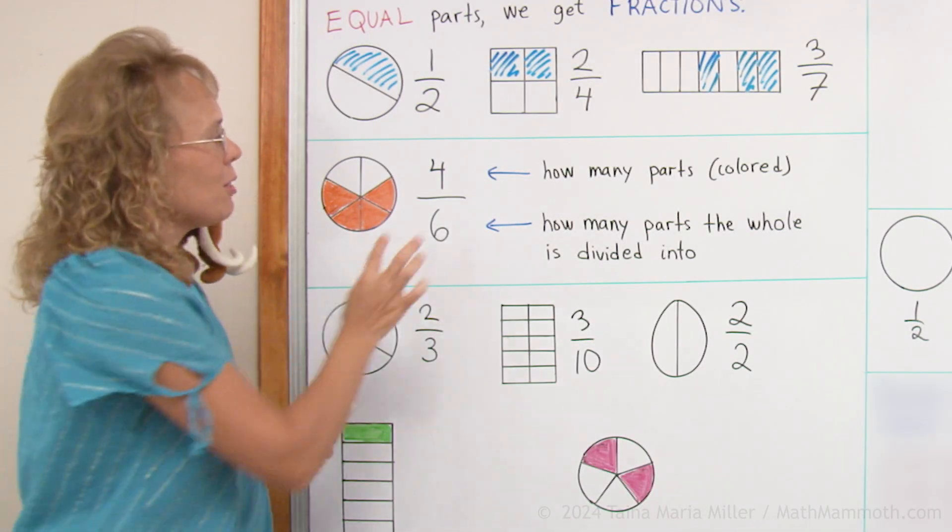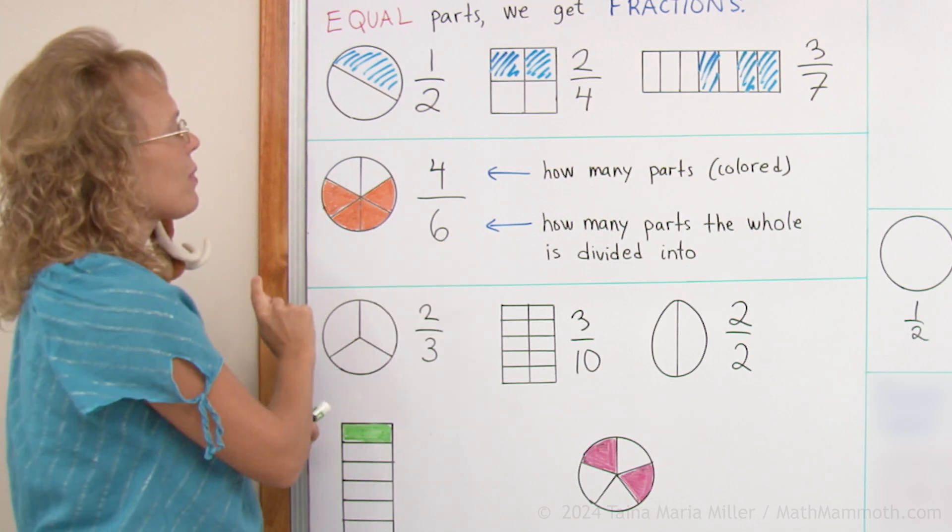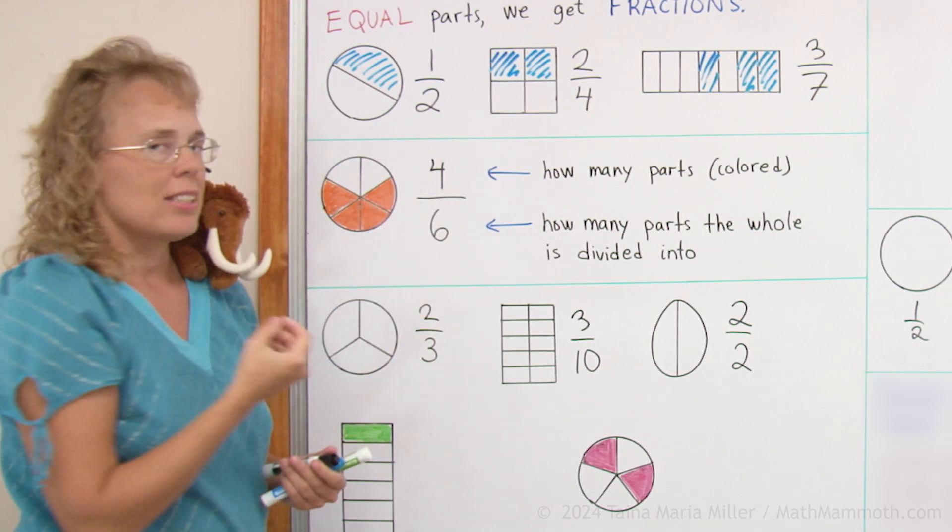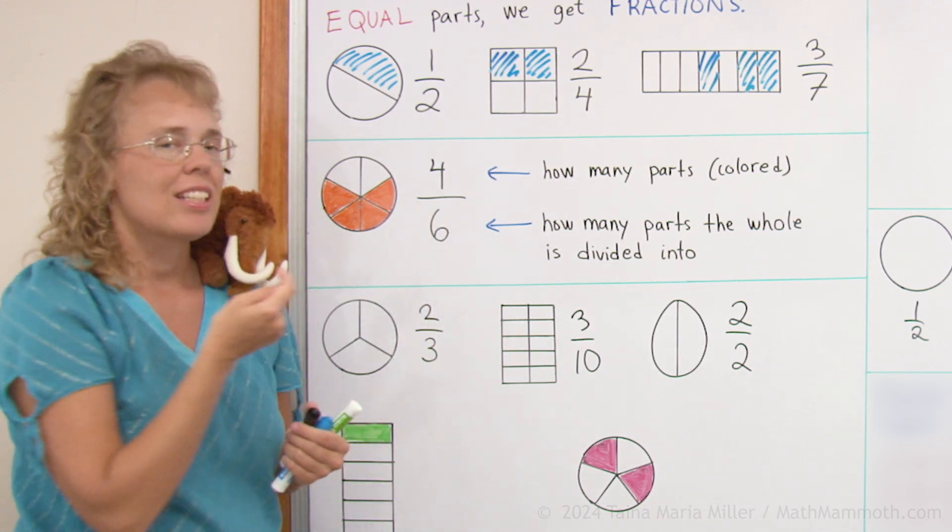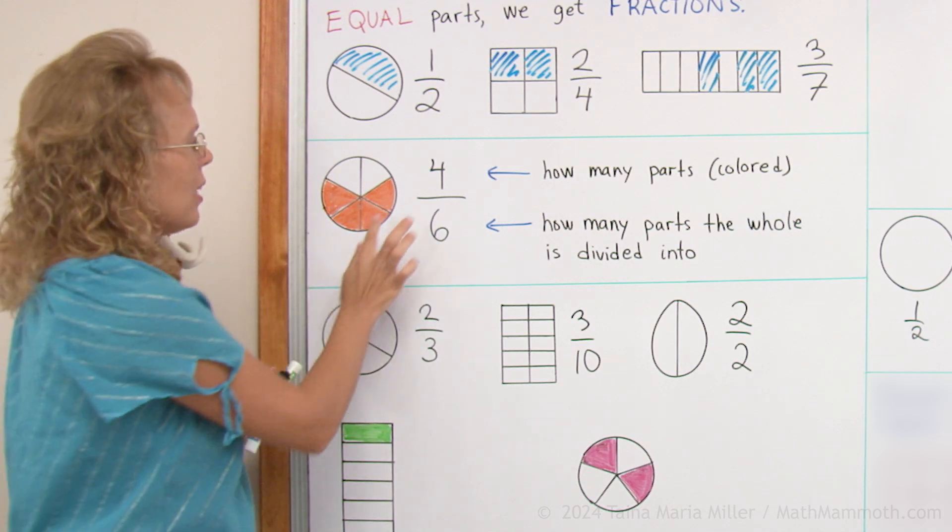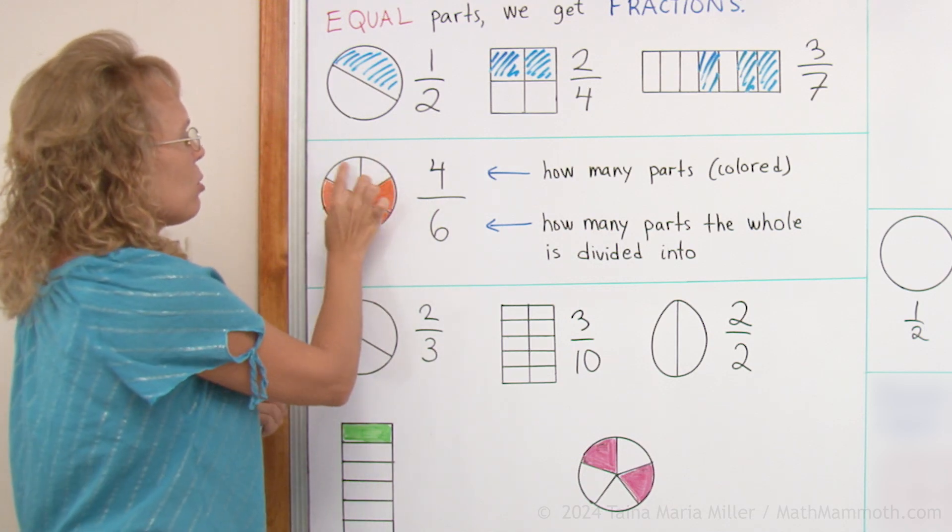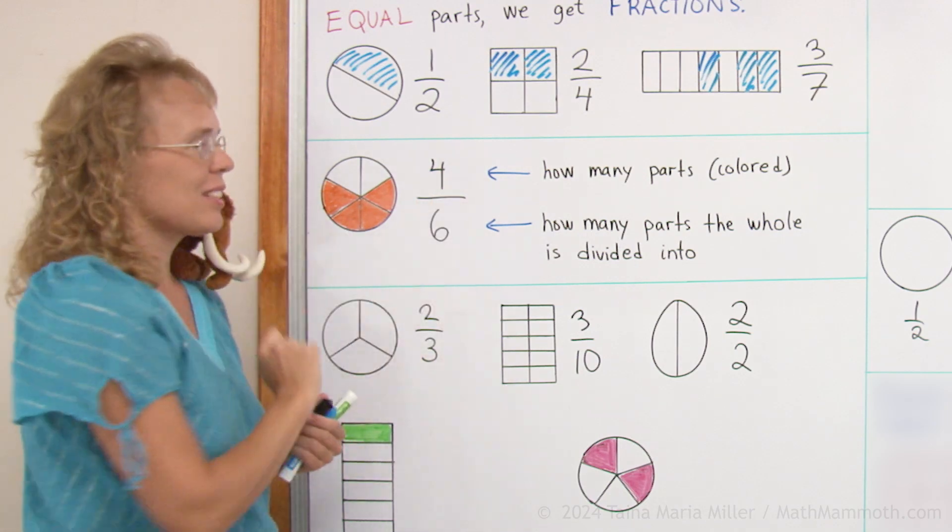In any fraction, when we write it like this, this is four sixths. This four tells us how many parts we're actually looking at, how many parts we have. And then six tells us how many parts is the whole divided into, how many equal parts. This circle is divided into six equal parts. And I colored four. So this is four sixths.